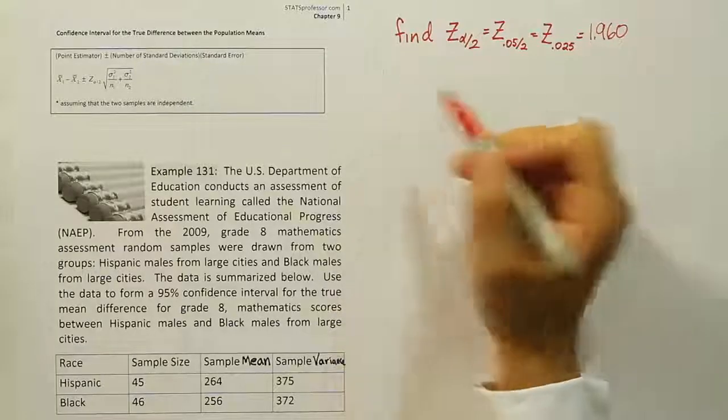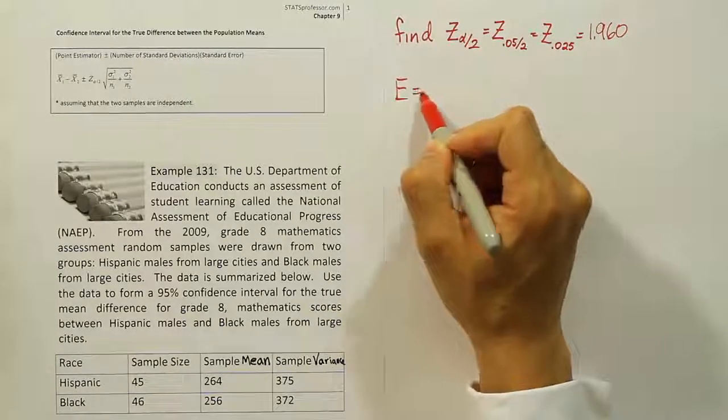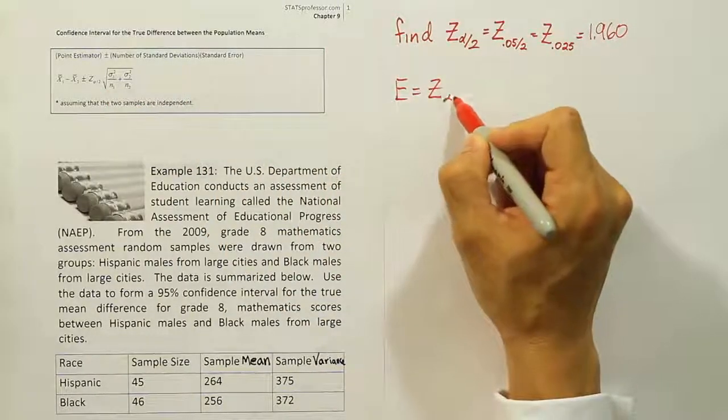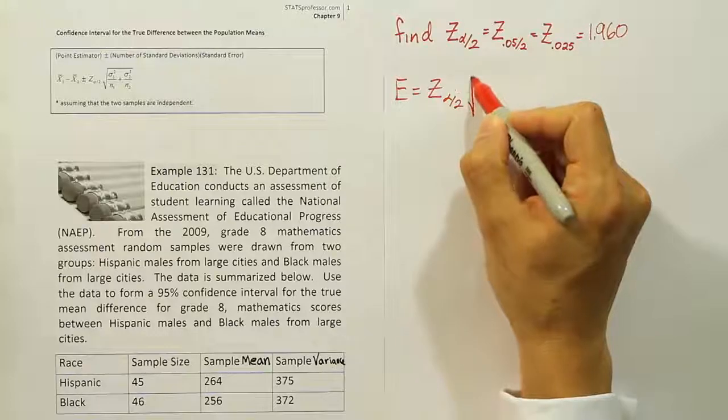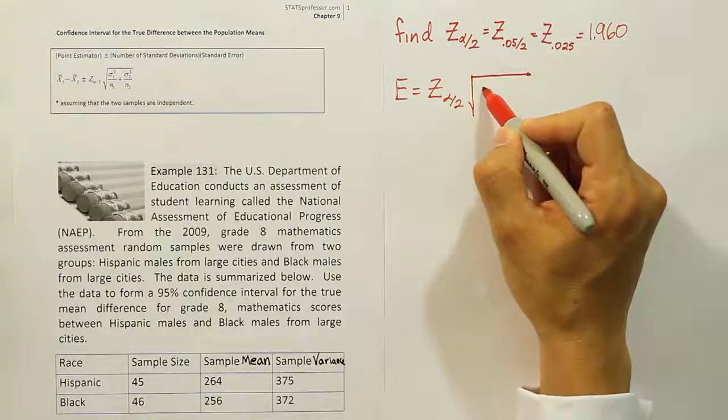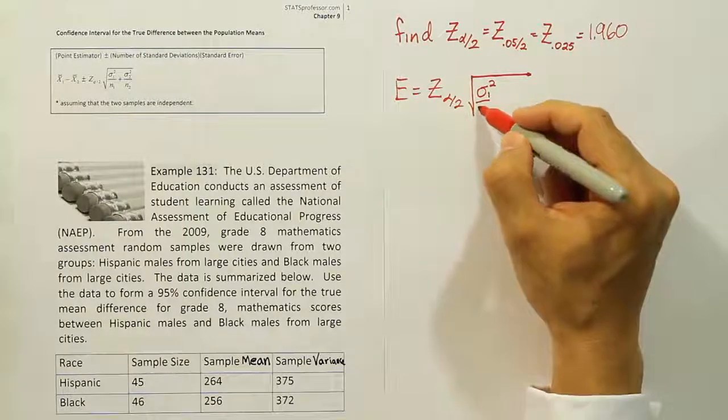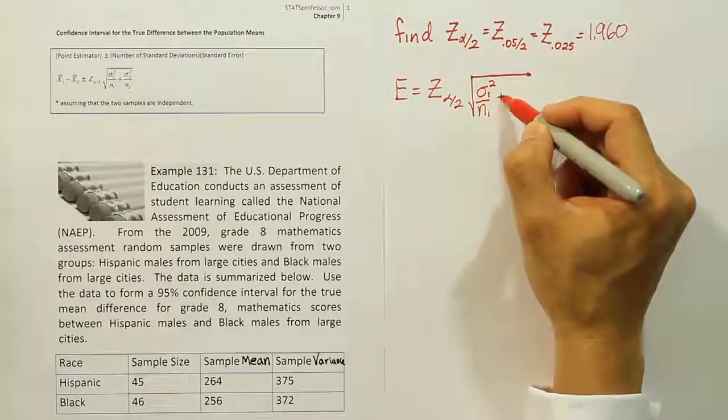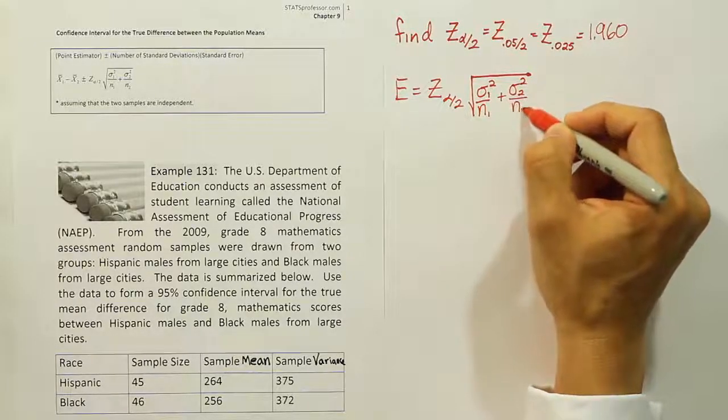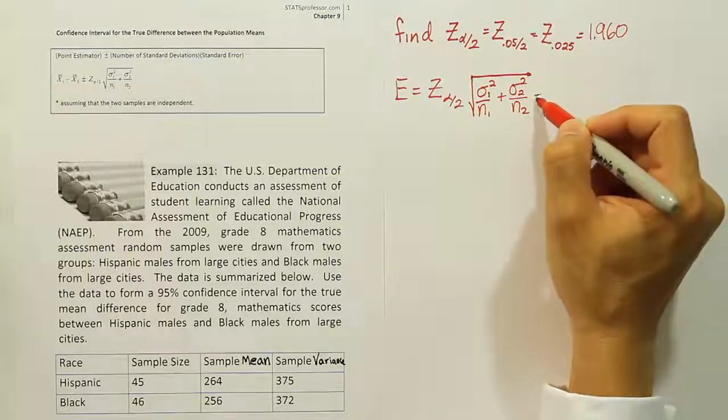From there we're going to calculate our margin of error. Our margin of error is E equals z alpha divided by 2 times the square root. And this square root is going to have the following values in it: the variance for the first group divided by its sample size, plus the variance for the second group divided by its sample size.